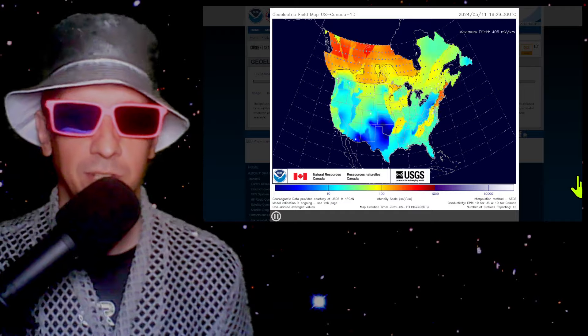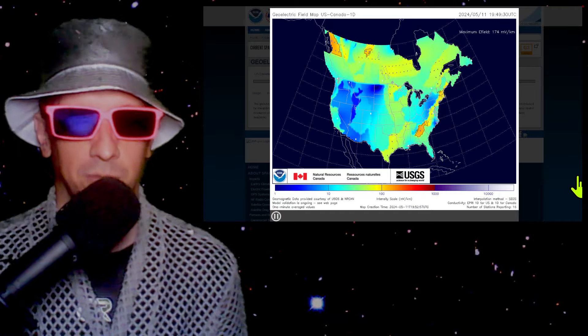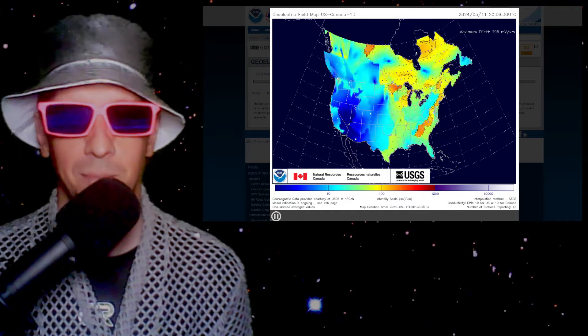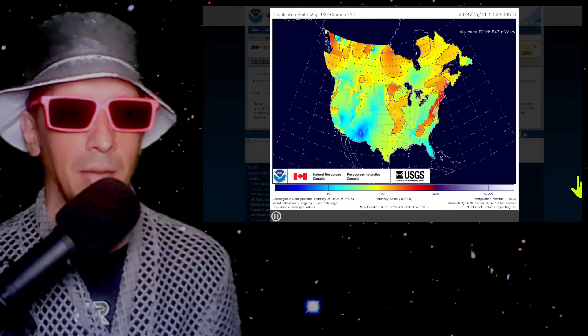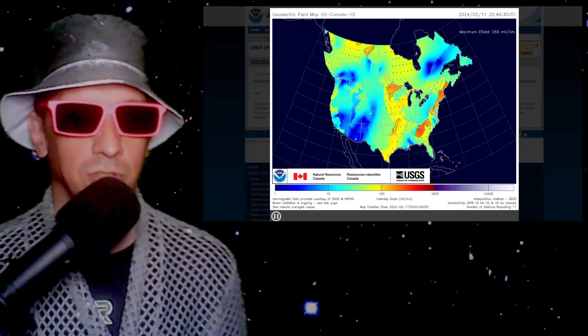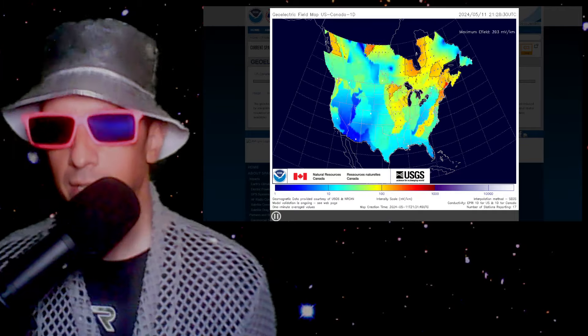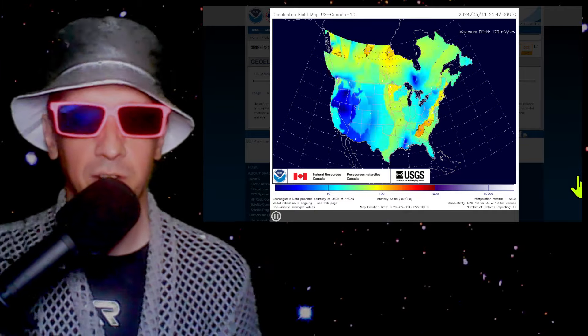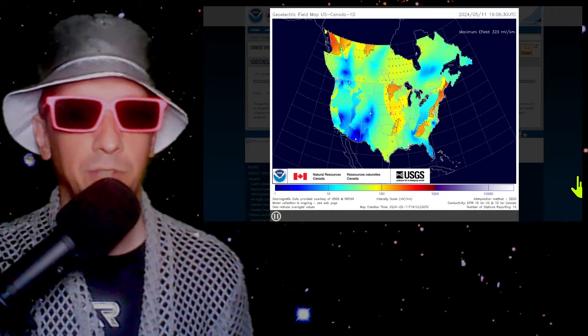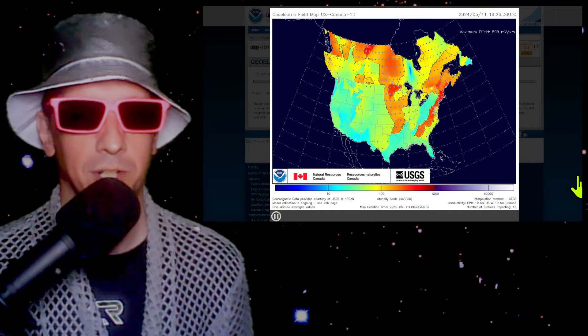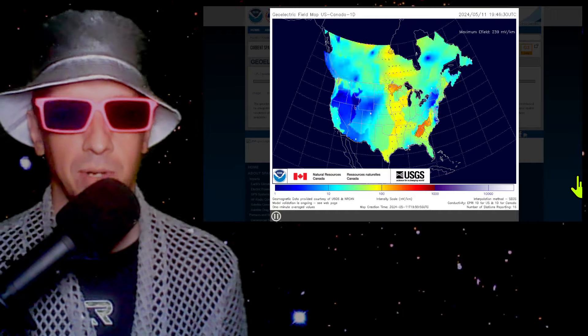So yeah, the geoelectric field is seeing lots of spikes over the past 24 hours. Of course, it's been an exciting time for space weather. The geoelectric field map is one of the ways you can view what's going on as far as power grid induction if you're in U.S. and Canada. Just check out the Space Weather Prediction Center. It is the geoelectric field map U.S. and Canada one-dimensional model. The empirical data.